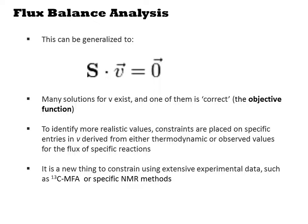It is a new thing to constrain these models using extensive experimental data such as C13 MFA or NMR methods. The MFA approach involves following an isotopically labeled metabolite through the metabolic map using high resolution mass spec techniques. Specific NMR methods involve following enriched metabolites or following atoms that are distinguishable by the methods such as following fluorinated metabolites.